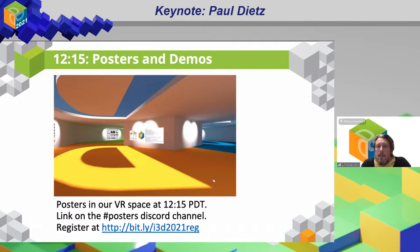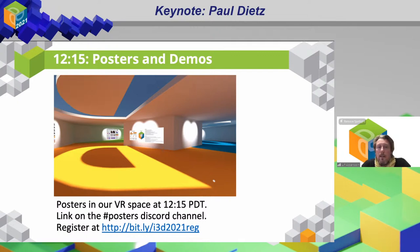The posters and demo session at 12:15 will be hosted by our poster chair Christoph Peters. You have to be registered to attend, but that is free. You'll find the link at the I3D homepage. When you register, you receive the link to the I3D 2021 Discord channel. Go to hashtag posters to see information about how to join. It's held in a 3D VR space, but you can also watch it via YouTube.